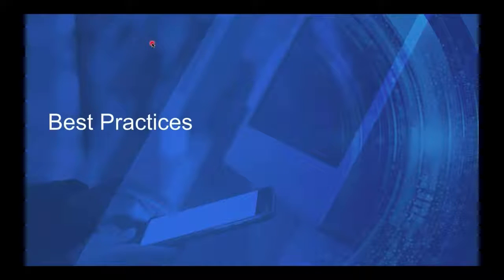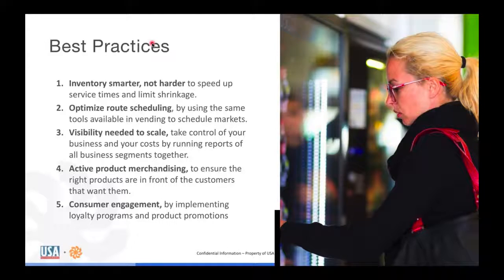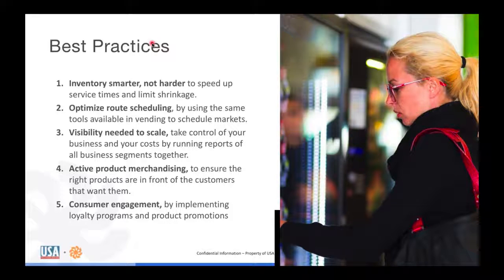Now that we've covered KNR's experience, let's review the five things to help you scale a micro market. First: inventory smarter, not harder. Instead of inventorying the entire market at once, inventory different sections — don't do all five coolers or two snack panels at the same time, just inventory one or two each time the driver is there. Use a barcode scanner in the driver handheld to make it faster to take inventory physically. Second: use dynamic scheduling so you're only touching the section of the market that needs service, not the entire market.